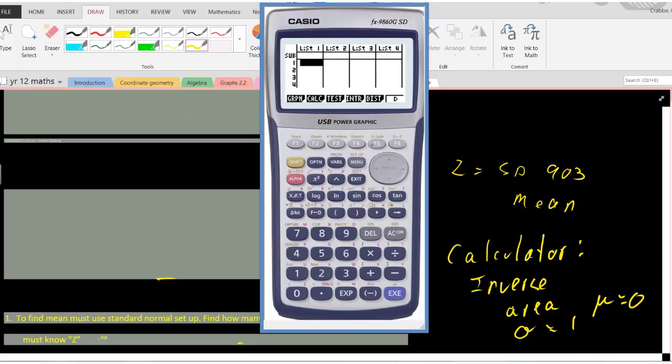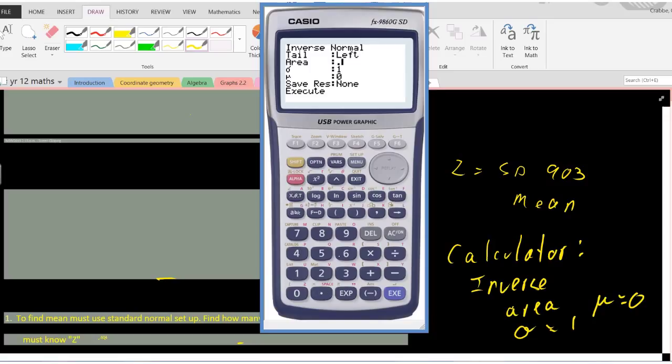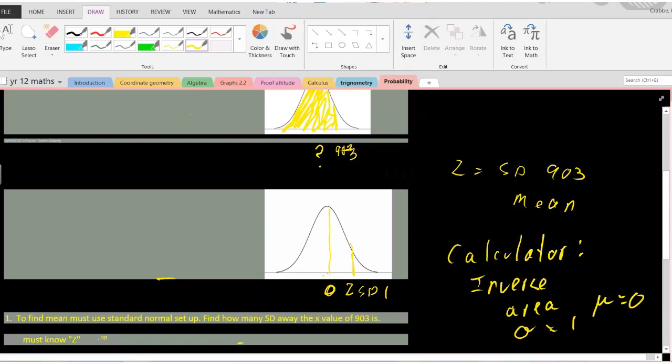We go to distribution, then normal inverse normal. We have area to the left, so we can leave that the way it is. Then we enter 0.657, the standard deviation is one, the mean is zero, and we get a value of 0.404.